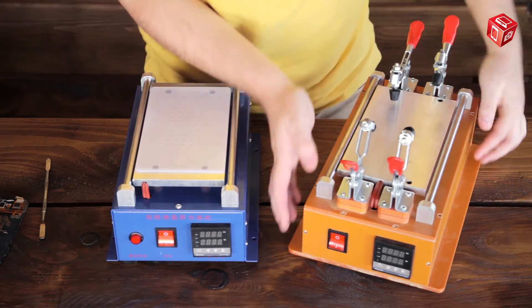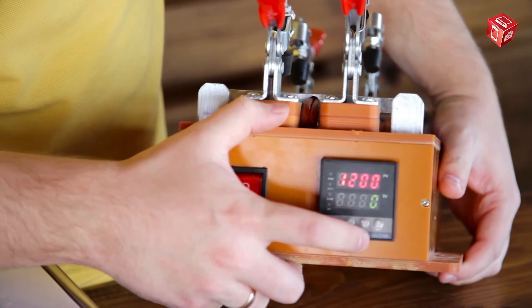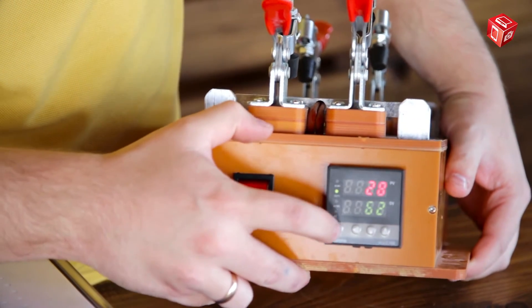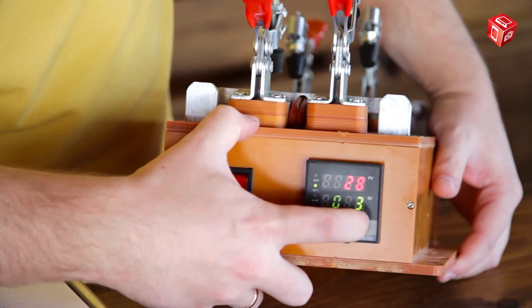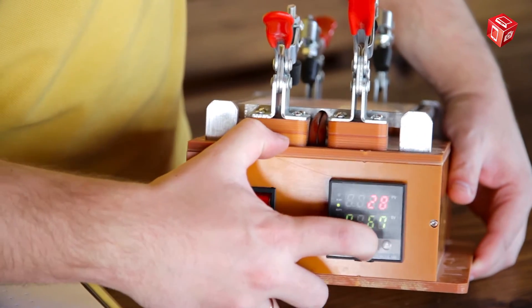Here we have an SM252 separator. A power button and a temperature control panel are located on the front panel of the device. Required temperature can be set using a small set button and up and down buttons.